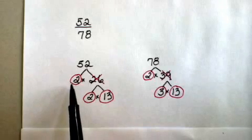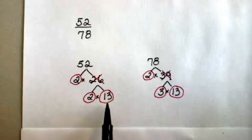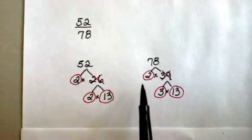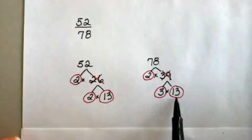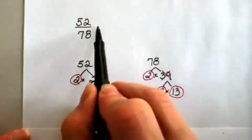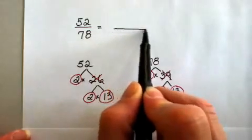52 is 2 times 2 times 13. 78 is 2 times 3 times 13, and again, we place those in the appropriate position.